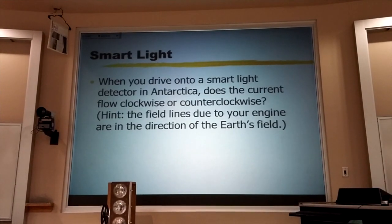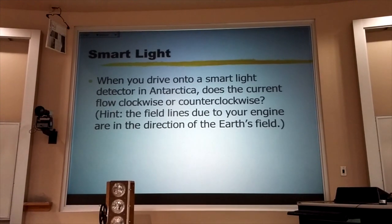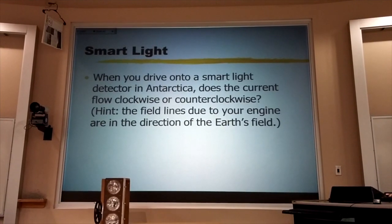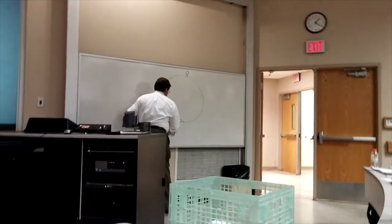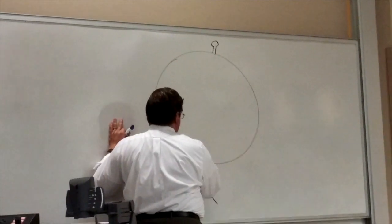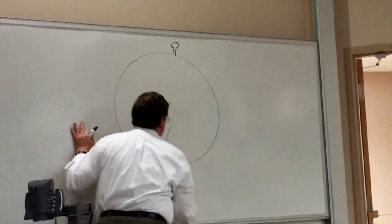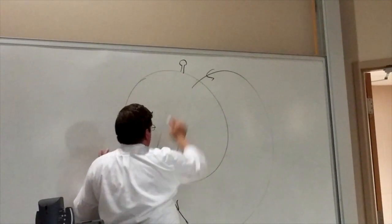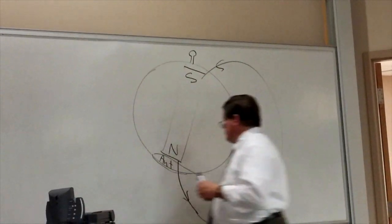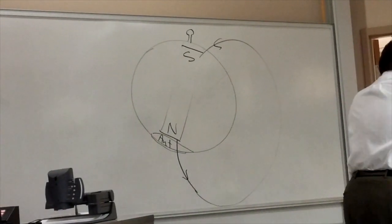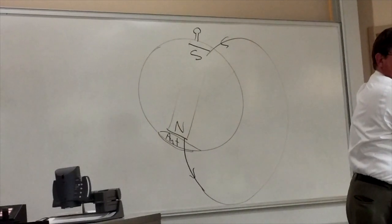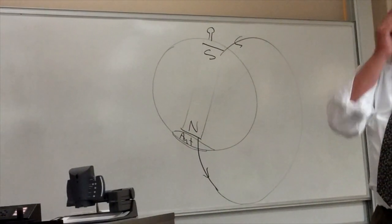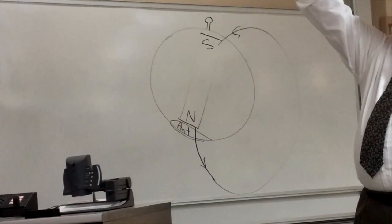Let's see how well we understand this. You drive on to a smart light detector in Antarctica. Remember where Antarctica is. If this is the Earth and this is where Santa lives, Antarctica is down here where the penguins live. The field lines come out of the North Pole, which is in the Southern Hemisphere. This is the North magnetic pole of the Earth, this would be the South. Where we live in Bozeman, field lines are going down into the Earth. If you live down where the penguins live, you'd be standing on a street and the field lines would be coming up out of the pavement.